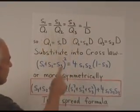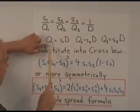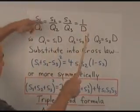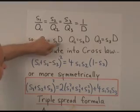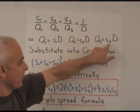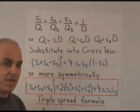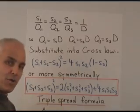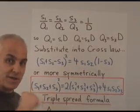That allows us to rewrite these various formulas as q1 equals s1 times d. So we just take those two and multiply. q1 equals s1 times d. Also q2 equals s2 times d, and q3 equals s3 times d. So we have three expressions for q1, q2, and q3. And we plug those in to the cross law.